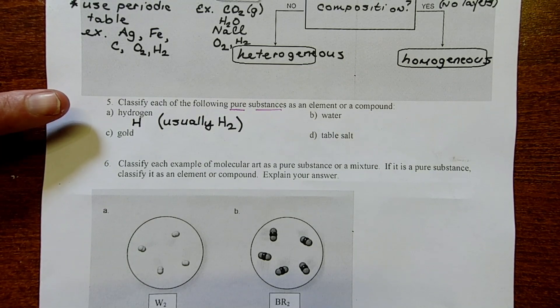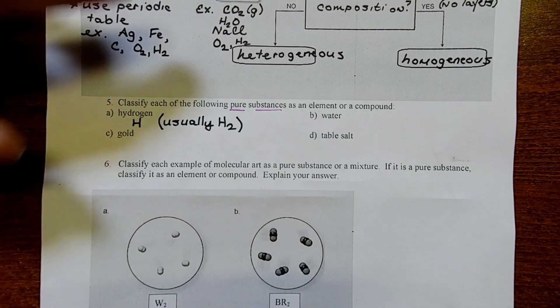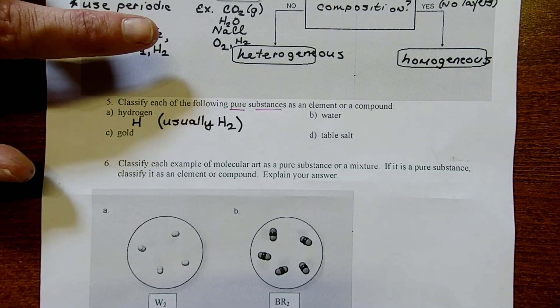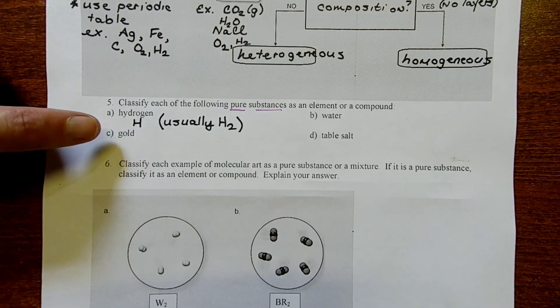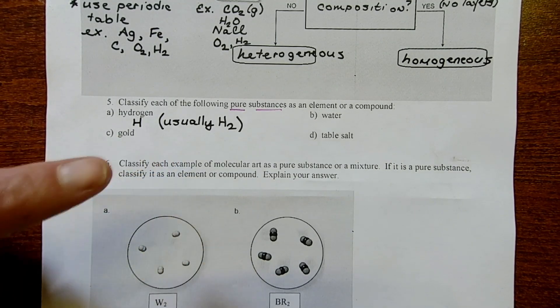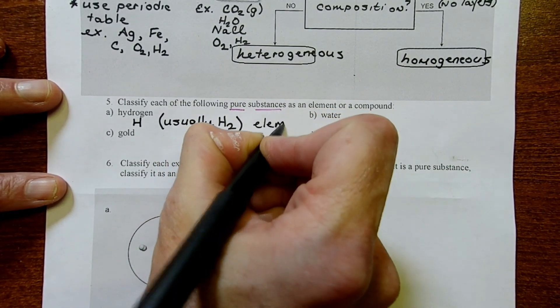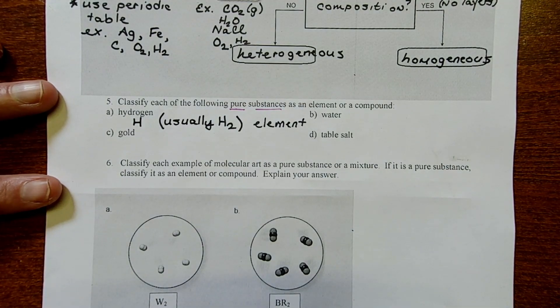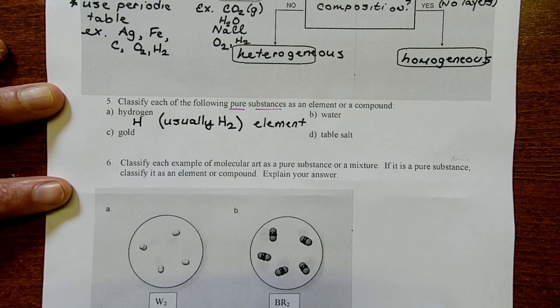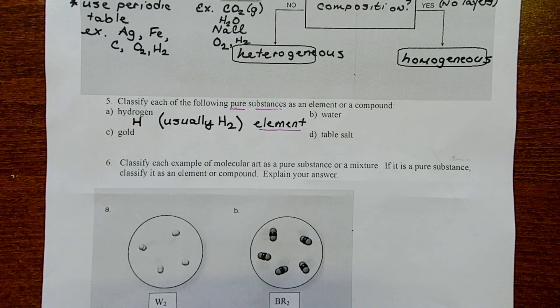In problem five, we're asked to classify each of the following pure substances as elements or compounds. We already know that we're on the left-hand side of this flowchart. The first example is hydrogen. Hydrogen has the elemental symbol H. However, it doesn't exist like that. Hydrogen exists as H2, so it's diatomic. This is one of those tricky ones. It's definitely an element. Everyone would agree with that. But because it has two or more atoms, you could also classify it as a compound. However, the more important of the two classifications is the fact that it's an element.